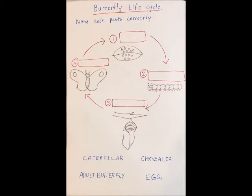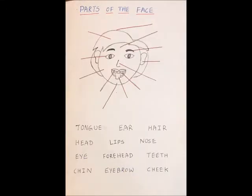The names of each part are given below, and the child has to identify which part comes first — like egg comes first or caterpillar — and name the correct life cycle parts.